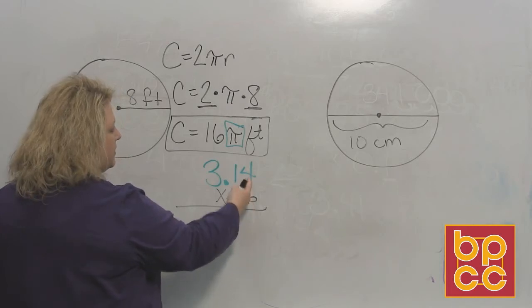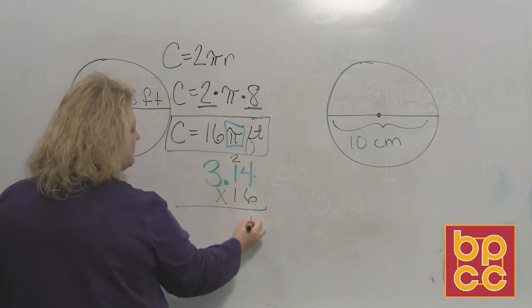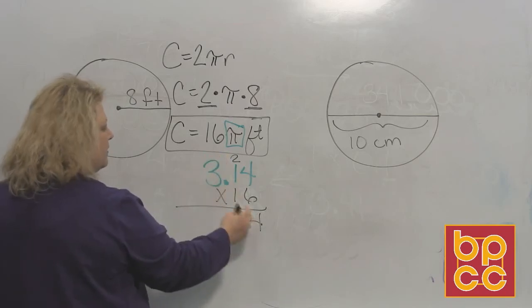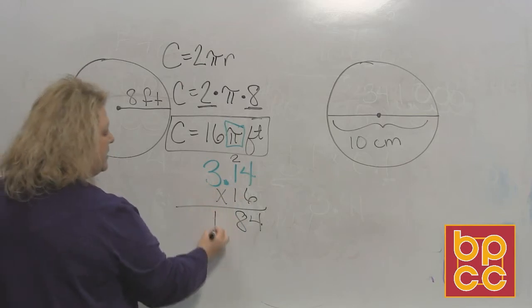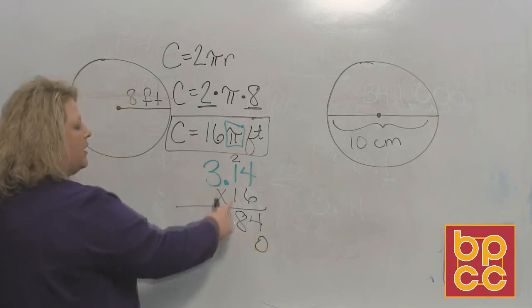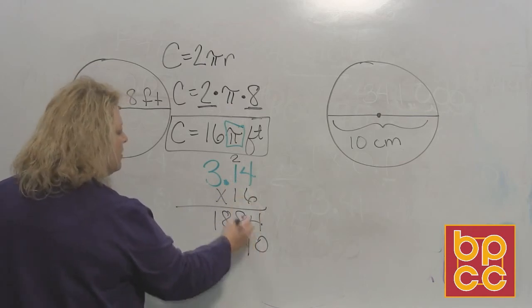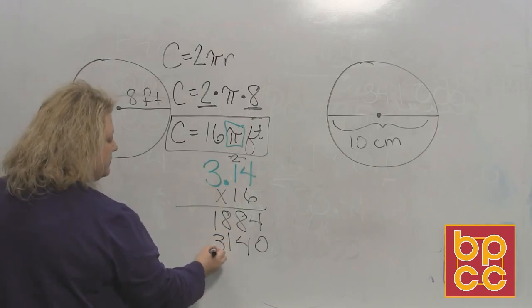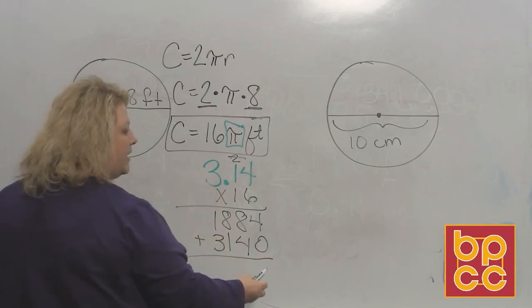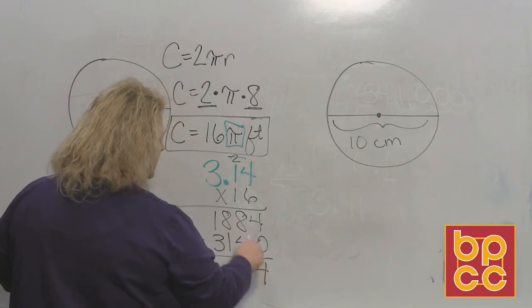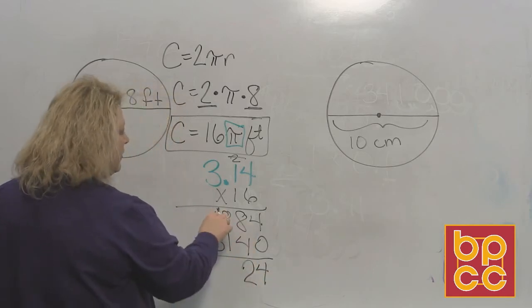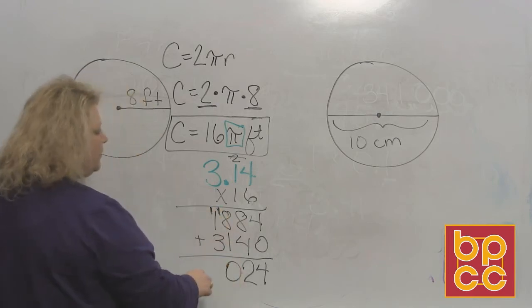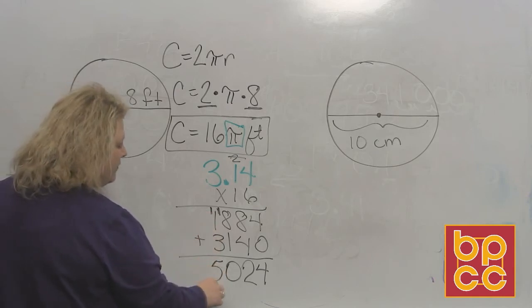And we practiced in a previous module how to multiply decimals together. So we start with our 6, 6 times 4 would be 24. 6 times 1 is 6, plus 2 makes 8. 6 times 3 makes 18. Remember to put your placeholder. And then 1 times 4 is 4. 1 times 1 is 1. 1 times 3 is 3. And then you would add, and that gives me 4, 8 plus 4 is 12, carry the 1 up. 8 plus 1 is 9, plus 1 more is 10, carry that 1 up. And 3 plus 1 is 4, plus 1 is 5.